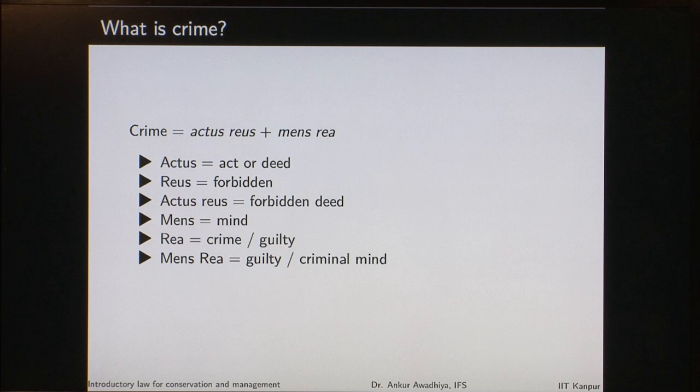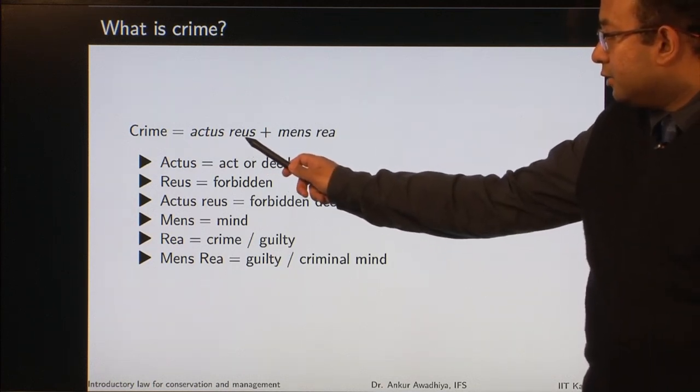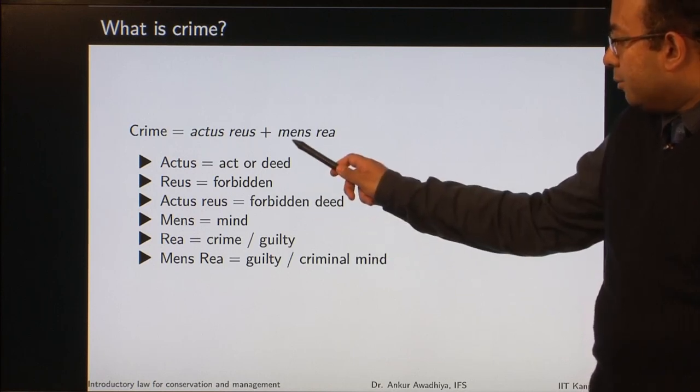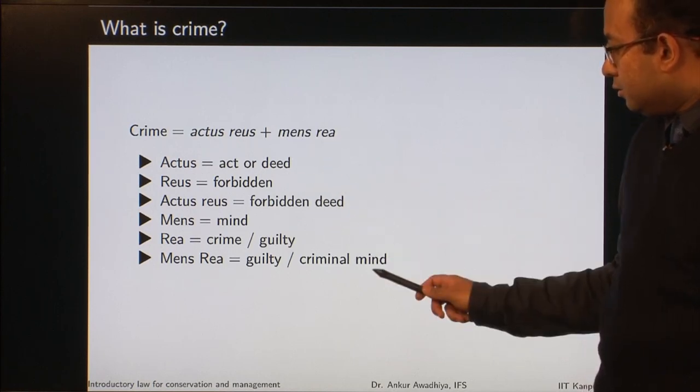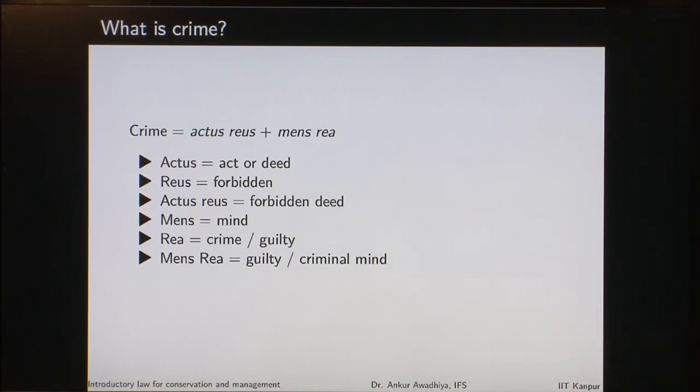Then we saw that crime consists of two parts: actus reus, that is the forbidden deed, and mens rea, which is the guilty mind. There has to be a physical act that is forbidden by law — that is the actus reus. But just doing that act is not sufficient to call it a crime; there also has to be a guilty mind or a criminal mind, that is mens rea.